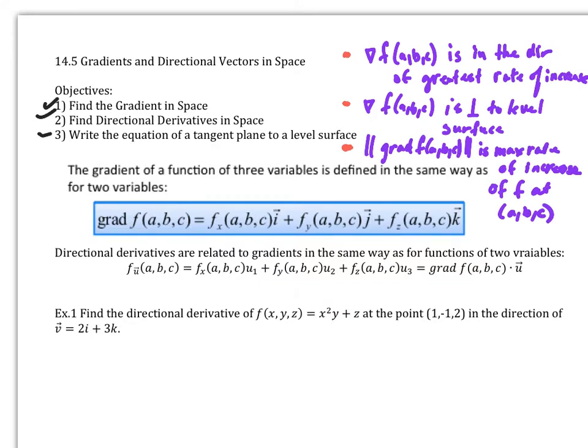Similar to what we had before, the gradient is going to be in the direction of the greatest rate of increase on F and then the gradient is also perpendicular to the level surface. And then the last is that the magnitude is a maximum rate of increase of F at ABC.